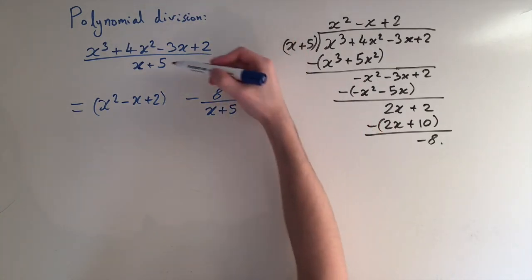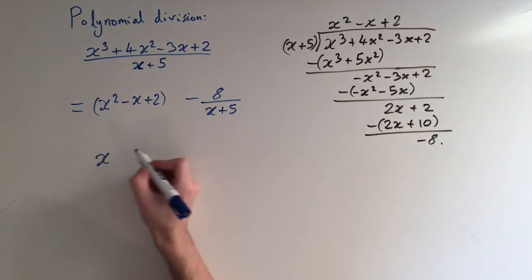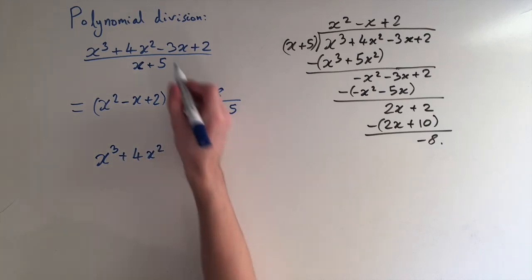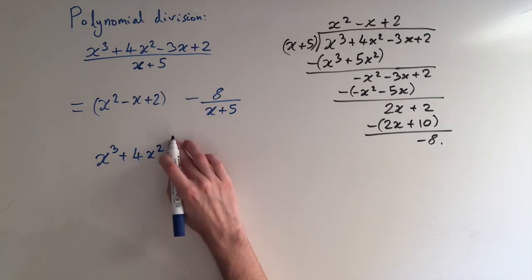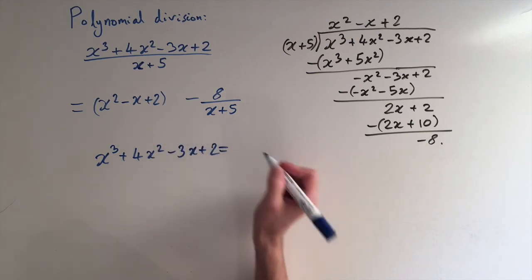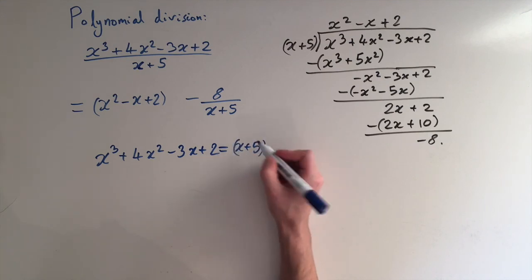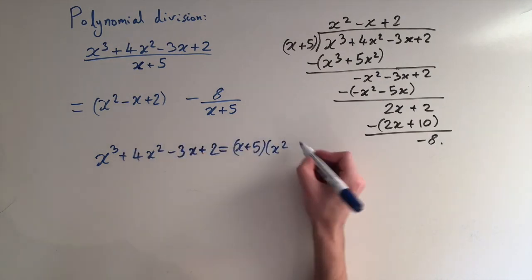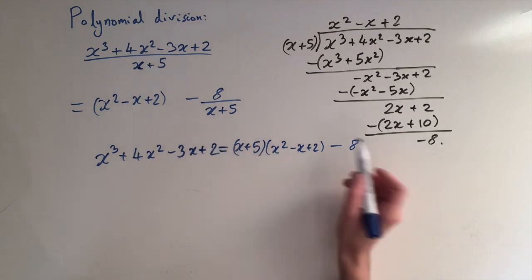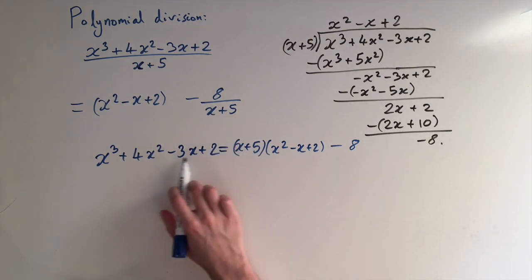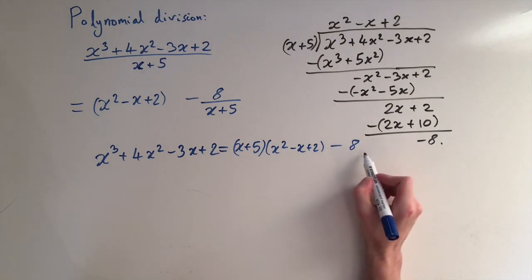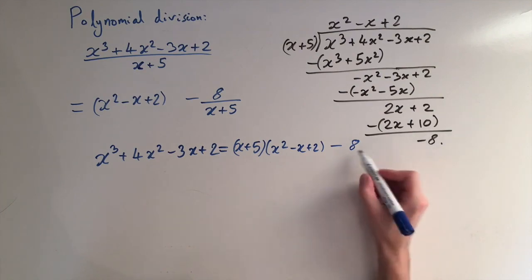We can think about this in a slightly different way. If we multiply both sides by x plus 5, it gives us a sort of — not a complete factorization, but some sort of factorization. So x cubed plus 4x squared minus 3x plus 2 equals x plus 5 times our answer x squared minus x plus 2, minus 8. The x plus 5 cancels on the remainder term, so we factorize this cubic as a linear term times a quadratic, but we've got this constant remainder which we can't factorize. This is what it means to have a non-zero remainder.